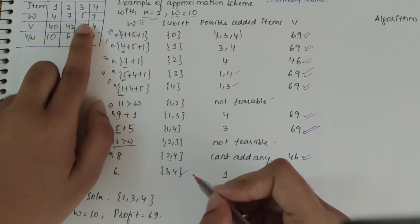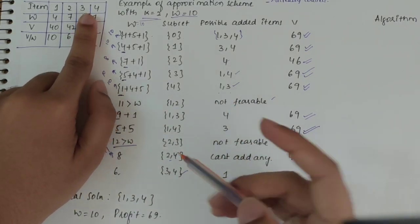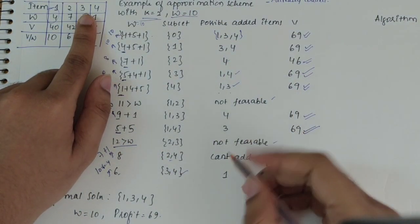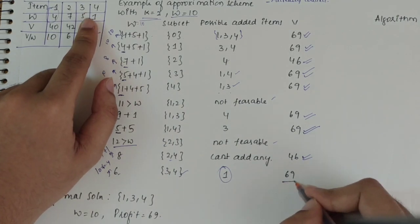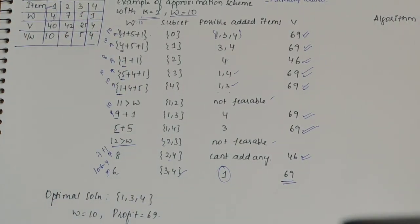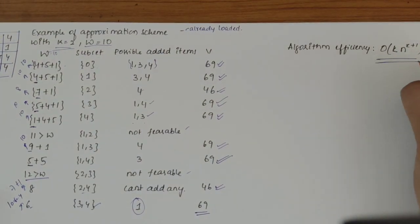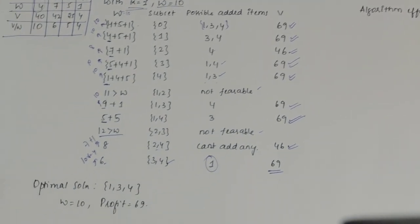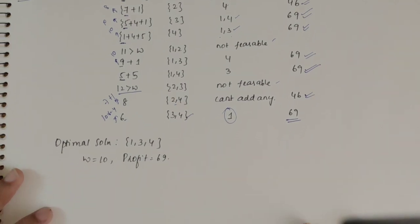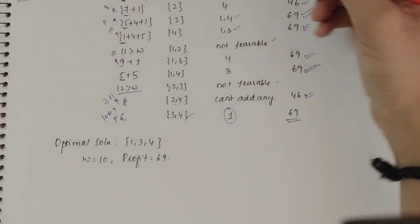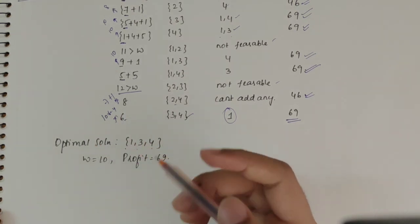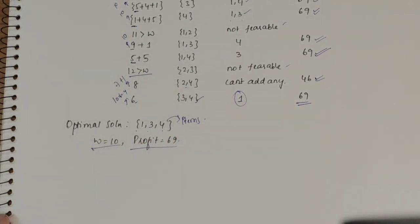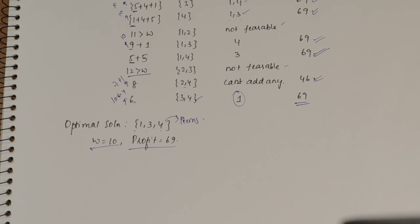Next, I will consider items 3 and 4, 5 plus 1 is 6. 6 is the weight, remaining is 10 minus 6 is 4. There is possibility of adding 4th item here, that is item 1, I will get 69. This was about the approximation scheme. The algorithmic efficiency here is order of k into n power k plus 1. K depends on what we are selecting. In this question, we took k as 2. Optimal solution - mostly we are playing with items 1, 3 and 4 here. The optimal solutions are items 1, 3, 4. The weight is 10 and the maximum profit is 69.